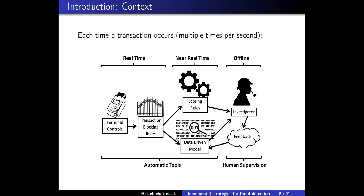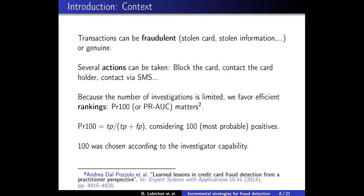Frauds can be of different types — card present, card not present — but here we will focus on the binary case: fraud versus genuine. Different actions can be taken to block the card or contact the cardholder. Our goal is to provide a ranking according to the probability of being a fraud for each transaction. We will report the Precision@100 because it's easy to understand: if we provide the 100 most probable frauds per day to investigators, what will be the number of true positives? The number 100 was chosen according to investigator capacity.